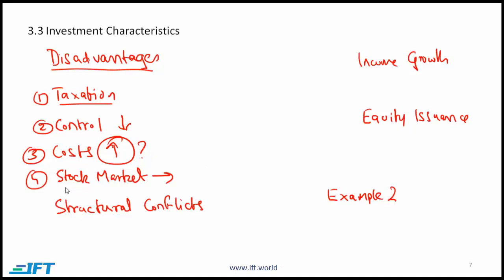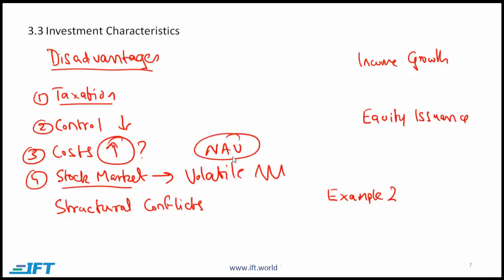The next point is that REIT share prices are determined in the stock market and tend to be volatile. Comparing REIT prices with the underlying NAV or net asset value, REIT prices tend to be much more volatile than NAV — so at least on the surface, the riskiness of REITs is higher relative to owning the underlying asset. However, this needs to be taken with a grain of salt because NAV values are based on appraisal data, and the volatility of appraisal data is generally understated.